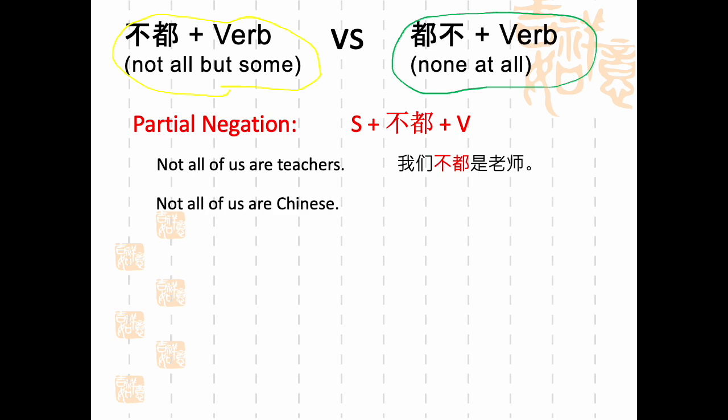中文怎么说？Not all of us are Chinese. Maybe one of us is Chinese, or two or three, but not everybody. We could say 我们不都是中国人. That's the partial negation.